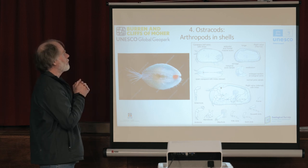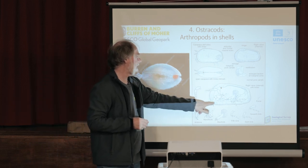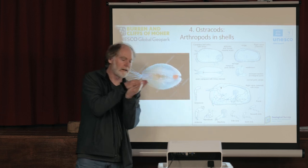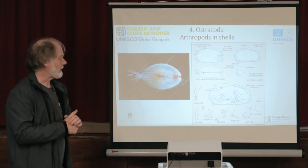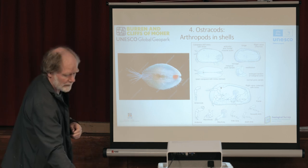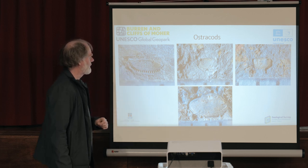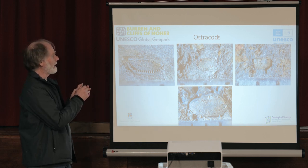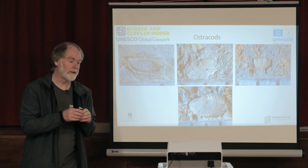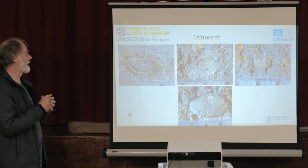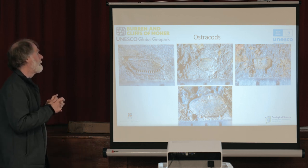Ostracods — again, new, never been found here before. They're essentially arthropods in shells, tiny at a couple of millimetres. They're like a little insect or crab — an arthropod with jointed legs living inside two shells, with antennae and legs sticking out to move around. They're very common in the world today and very useful for looking at ancient environments. I've only found eight or nine specimens in total, but out of those, there are at least four different kinds — so while the number is very low, the diversity is really high. I'm working with Malcolm Hart, a micropaleontologist in the Riviera Geopark in the UK.